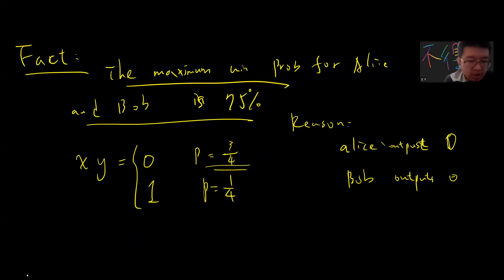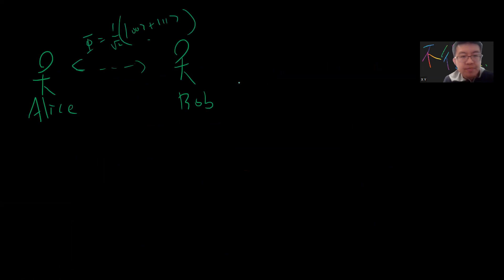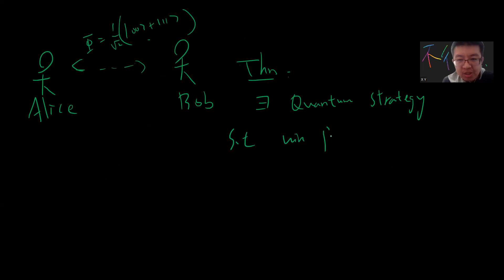The interesting thing is that in quantum mechanics, Alice and Bob can share an entangled Bell pair. So there is a case where Alice and Bob are still not allowed to communicate, but they share a Bell pair. The theorem is really surprising: there exists a quantum strategy where they do measurements using this Bell pair, and the winning probability is higher than 75%. Specifically, it is (2 + √2) / 4, which is greater than 3/4.